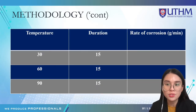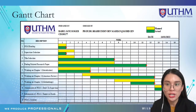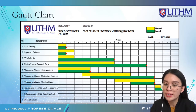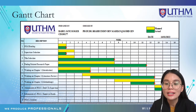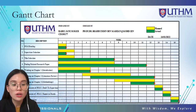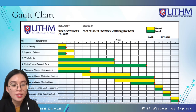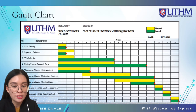From the Gantt chart: PSM briefing and supervisor selection were done in Week 1. Title selection and paper finding were done in Weeks 7 to 11. Chapter 1 Introduction was completed in Week 4. Chapter 2 Literature Review was completed between Weeks 5 and 12. Chapter 3 was completed between Weeks 10 and 12, followed by submission of the draft to the supervisor and panel earlier than expected. In Week 15, I will be conducting my final year project presentation. That concludes my presentation, thank you.